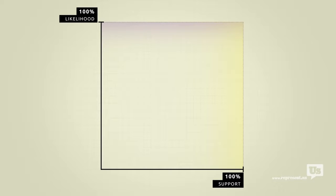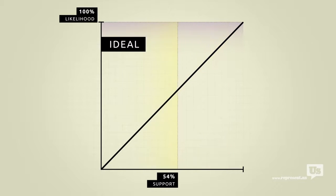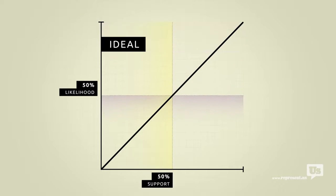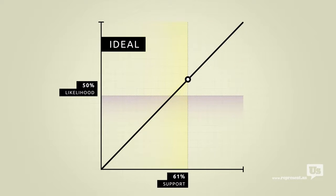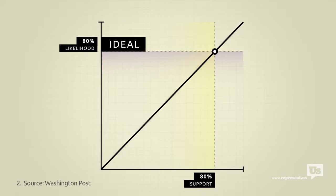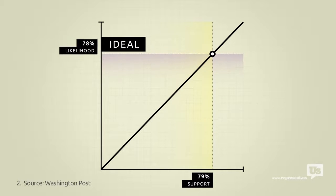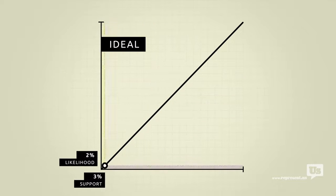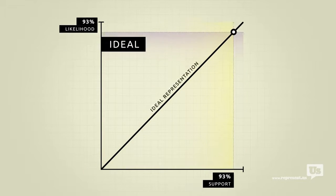On this graph an ideal republic would look like this. If 50% of the public supports an idea there's a 50% chance of it becoming law. If 80% of us support something there's an 80% chance. Most Americans would probably agree that with a few exceptions we should be as close to this ideal as possible.